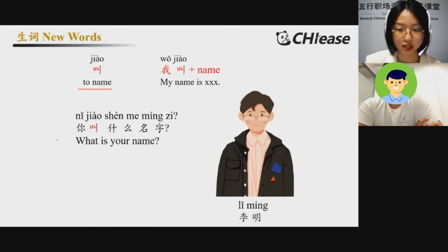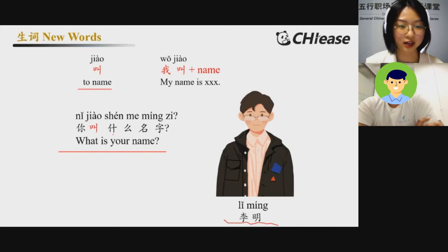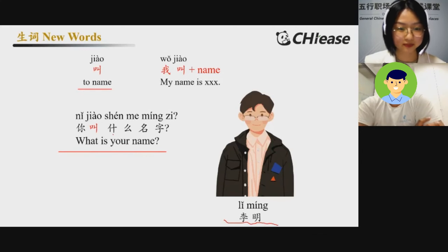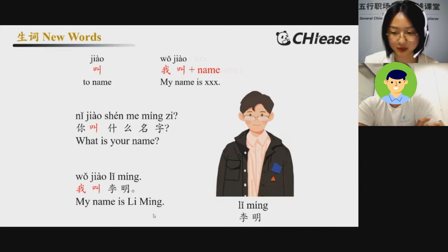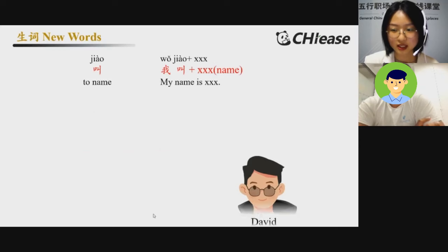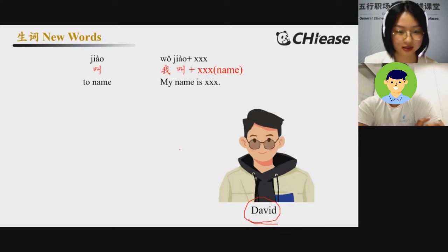Could you answer this question for him? His name is 李明. So I ask, 你叫什么名字? 我叫林明. Very good. And next one: 你叫什么名字? 我叫David.